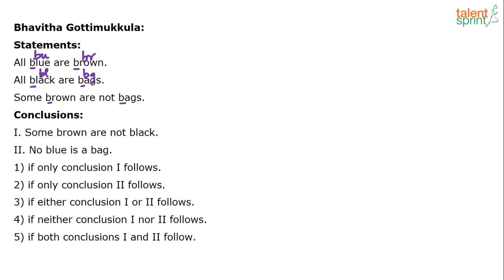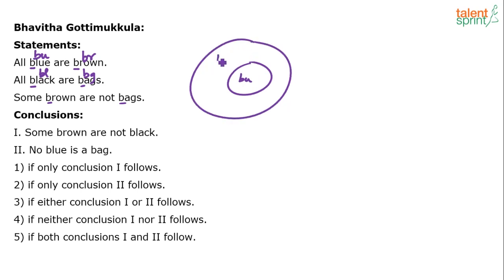Now draw the basic diagram for the given statements. First statement: all blue are brown. So blue goes inside brown. Now the challenge is we have drawn a Venn diagram with blue and brown, but we have neither black nor bags yet. So drawing the second statement immediately would not be possible.